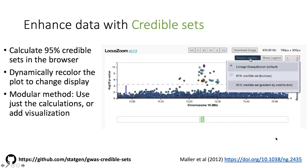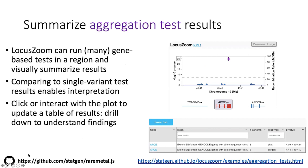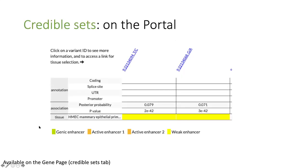As one example, on the portal there was already existing infrastructure for showing credible sets from precalculated results. They were able to take this and plug in these routines to calculate credible set posterior probabilities for variants in a region and show them in table form. This is shown on the gene page for everything with T2D.